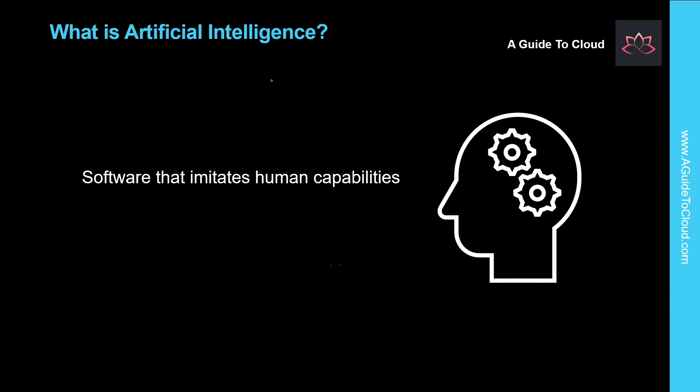So what is artificial intelligence? Simply put, artificial intelligence is the creation of software that imitates human behaviors and capabilities. Some of the key elements include making decisions based on data and past experience, detecting anomalies, interpreting visual input, understanding written and spoken language, and engaging in dialogues and conversations.